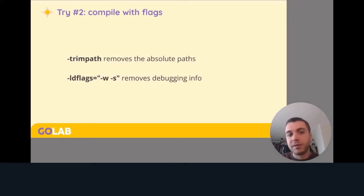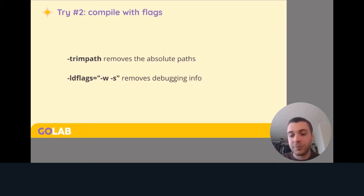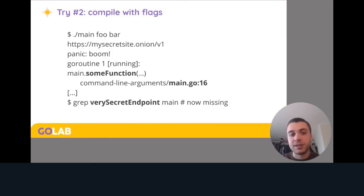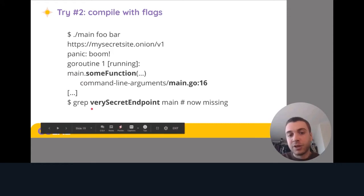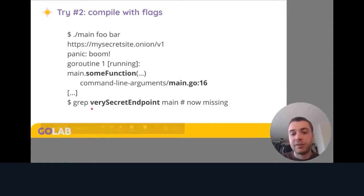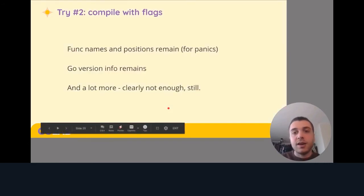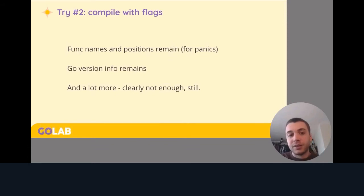Now, there's a build flag called trimpath that removes absolute paths from the position information — that's good. We can also use the linker flags -w and -s to remove debugging information and the symbol table. If we do those things, panic still shows the function name and file/line number, but no longer shows where I was when I built, thanks to trimpath. Some information like variable names is now missing. However, the Go version information and most other things remain. So this is clearly still not enough, even though we added a bunch of flags.